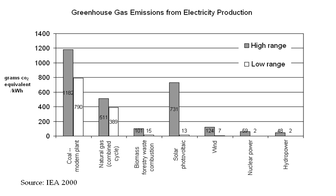Leading renewable energy companies include BrightSource Energy, First Solar, Gamesa, GE Energy, Goldwind, Sinoval, Suntech, Trina Solar, Vestas, and Yingli. The incentive to use 100% renewable energy has been created by global warming and other ecological as well as economic concerns. Mark Z. Jacobson says producing all new energy with wind power, solar power, and hydropower by 2030 is feasible, and existing energy supply arrangements could be replaced by 2050. Barriers to implementing the renewable energy plan are seen to be primarily social and political, not technological or economic.